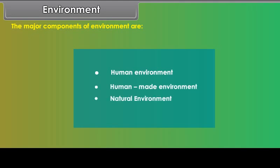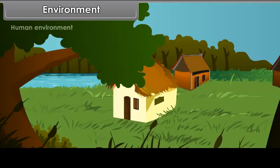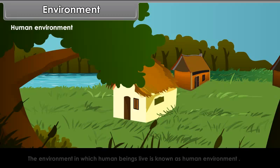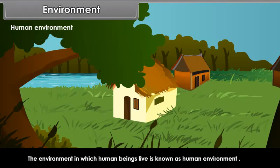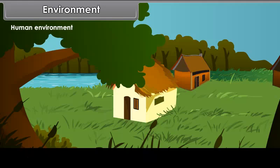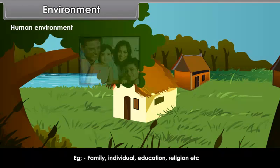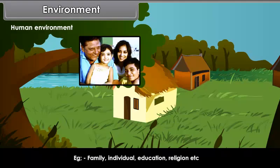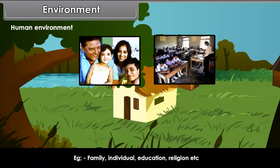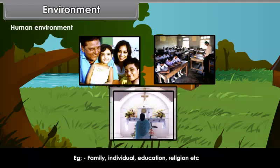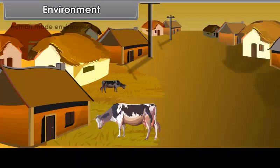Human environment: The environment in which human beings live is known as human environment. Examples include family, individual, education, religion, etc.